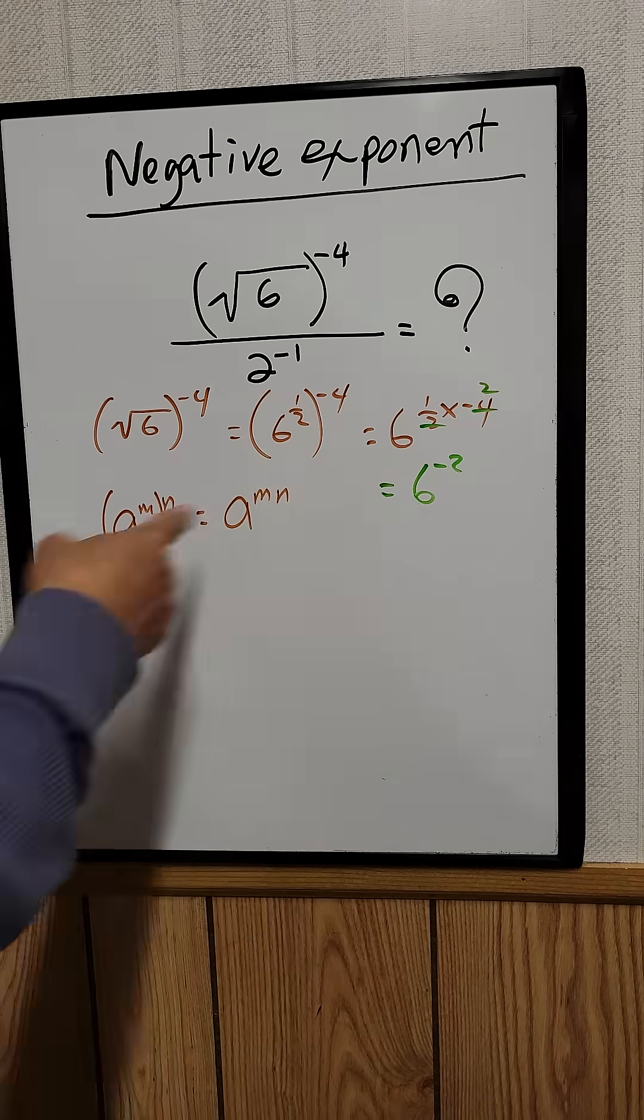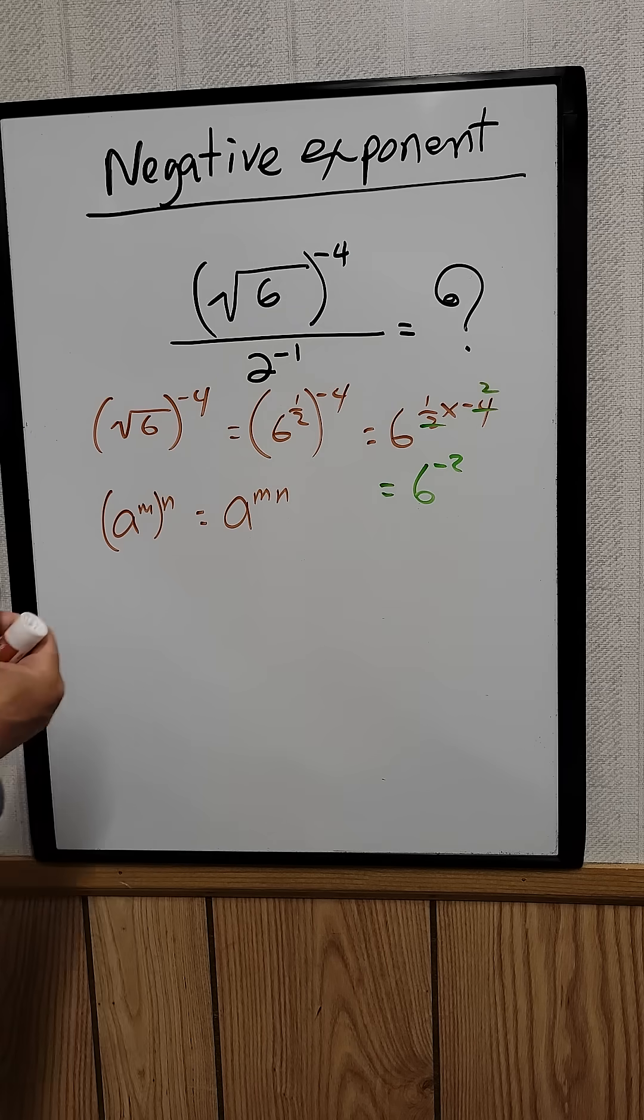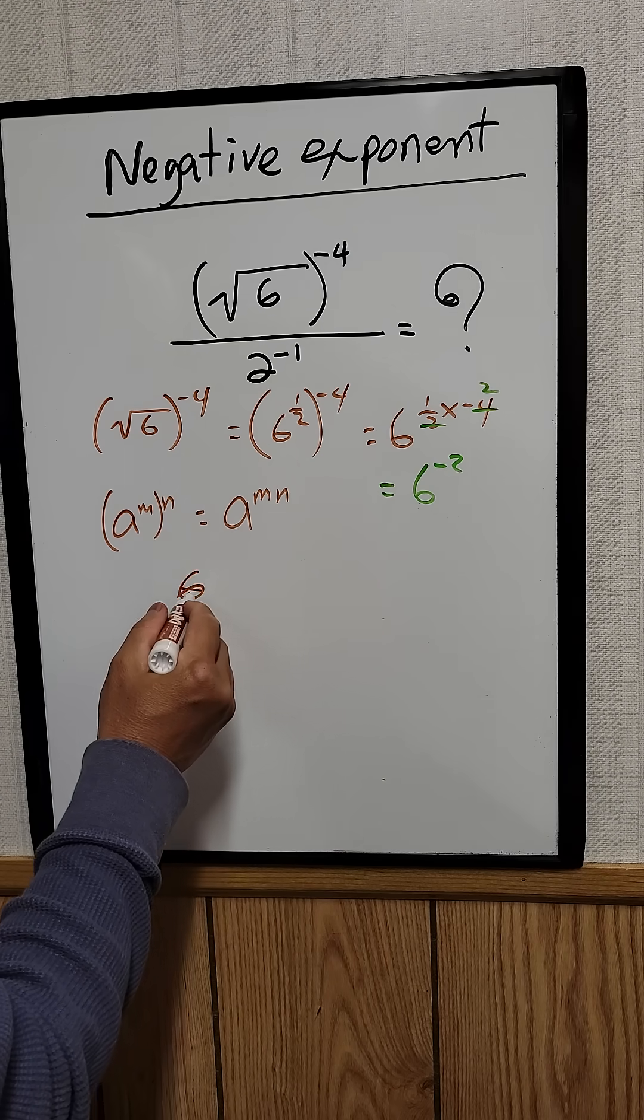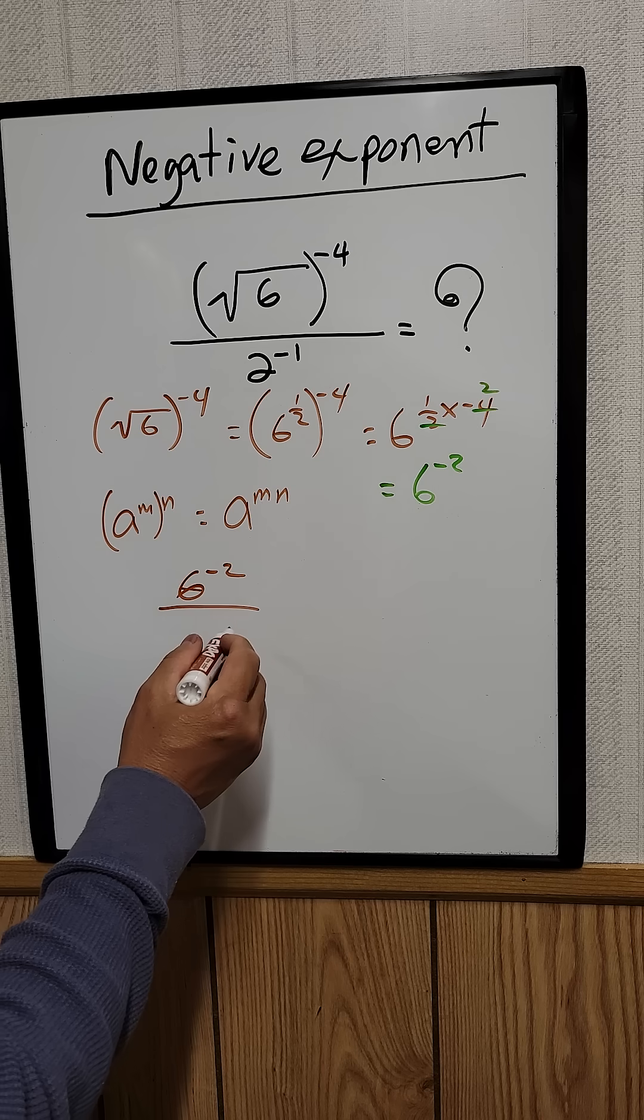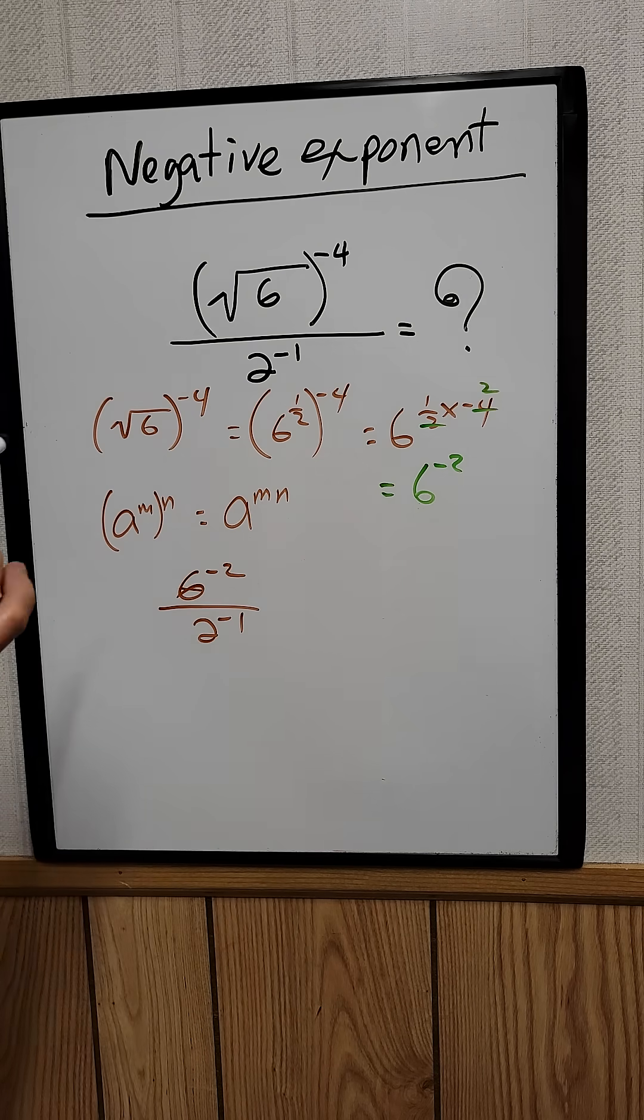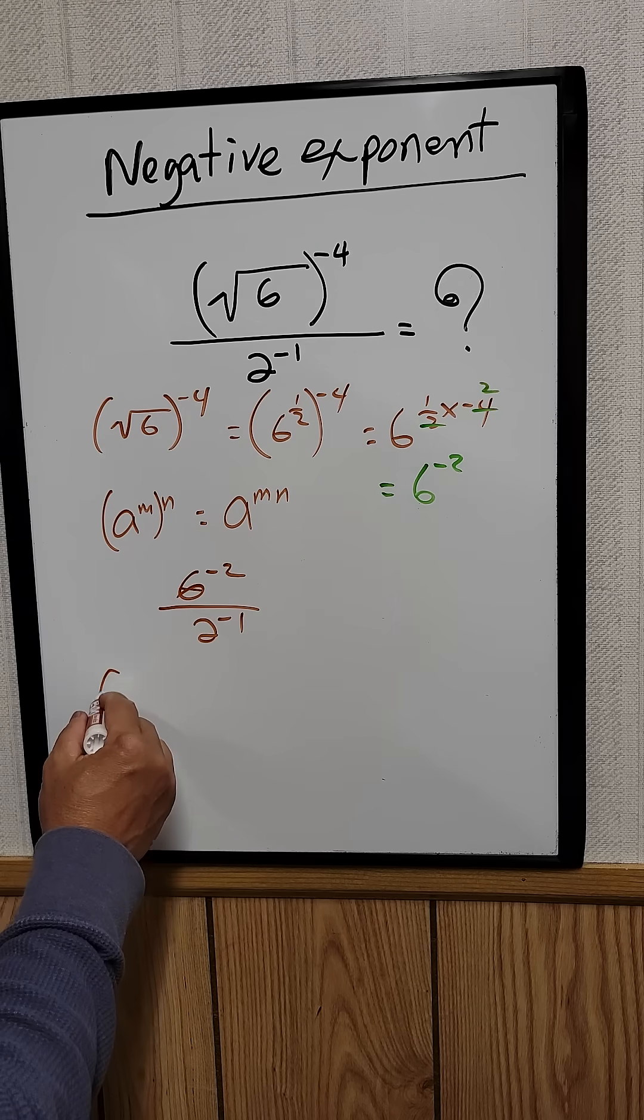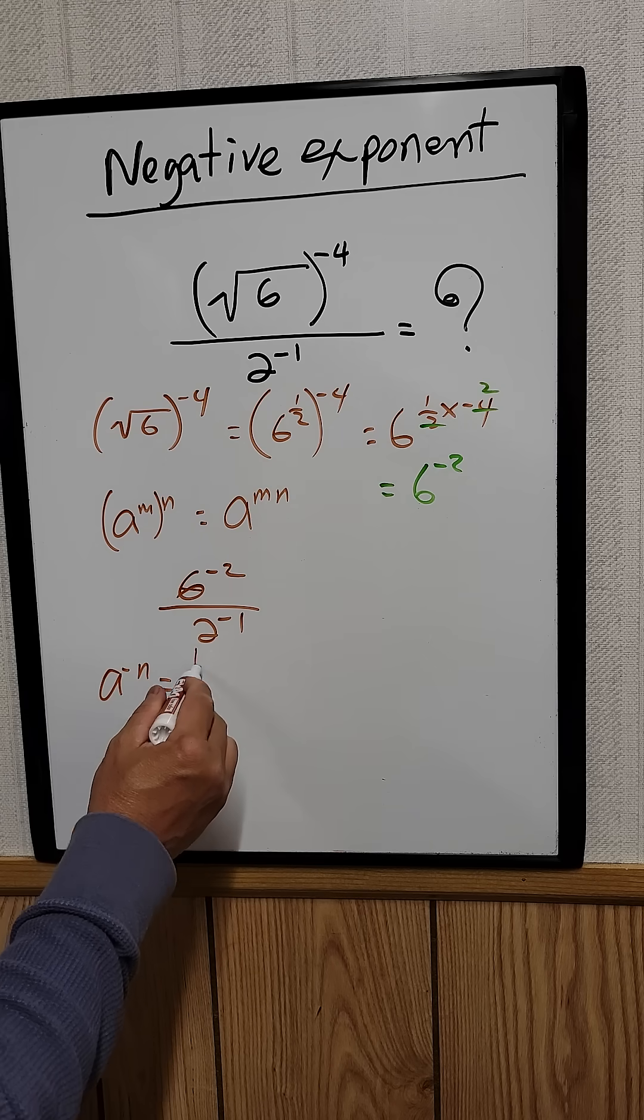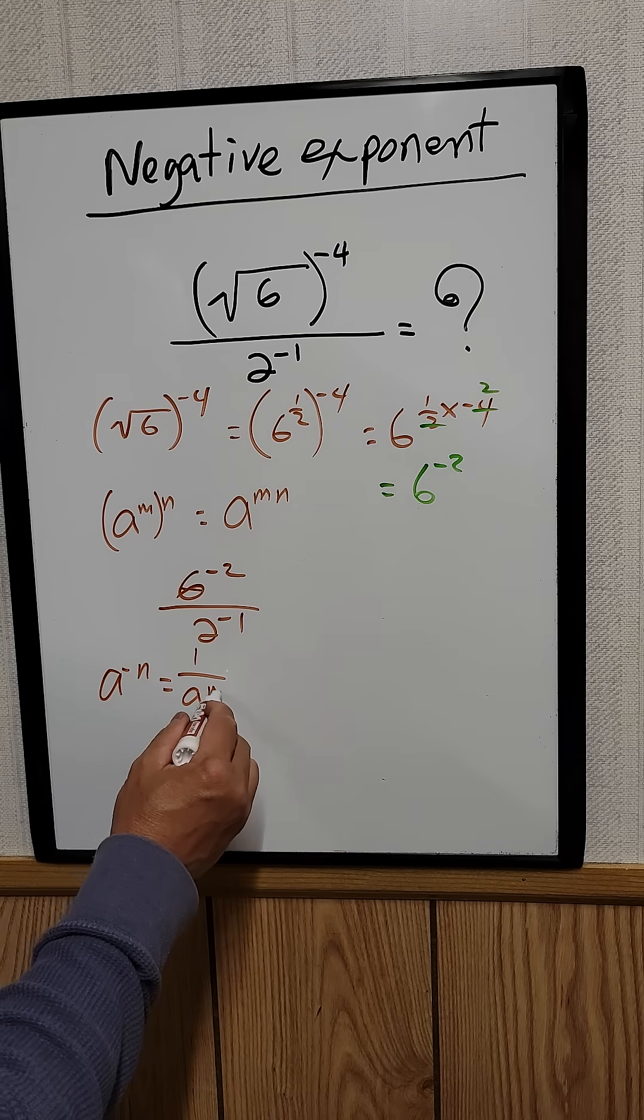So now we can plug this back in and say 6 raised to the negative 2 divided by 2 raised to the negative 1. There's another law of exponents that states that if you have a raised to the negative n, you can rewrite that as 1 over a raised to the n power.